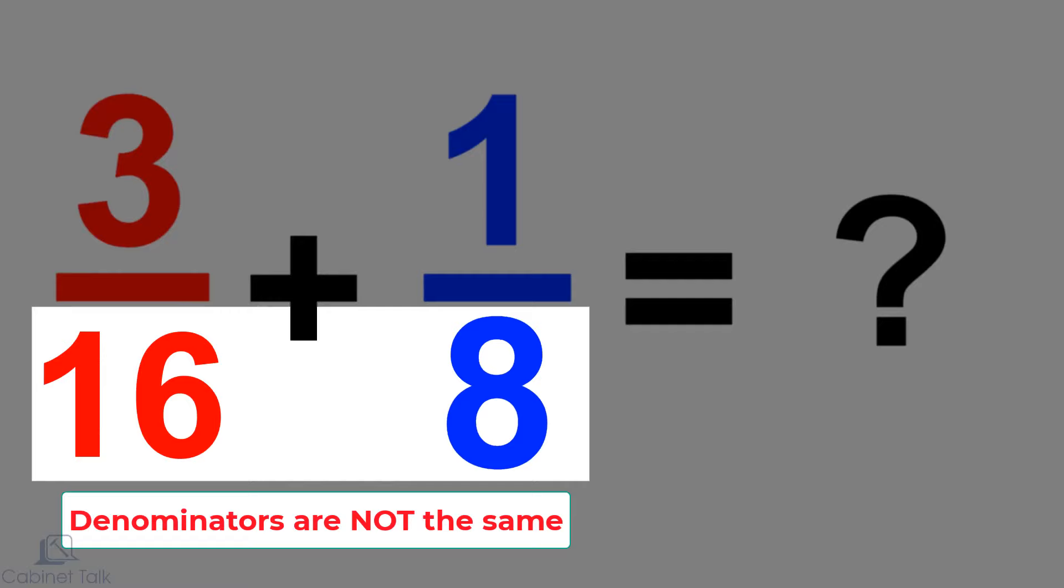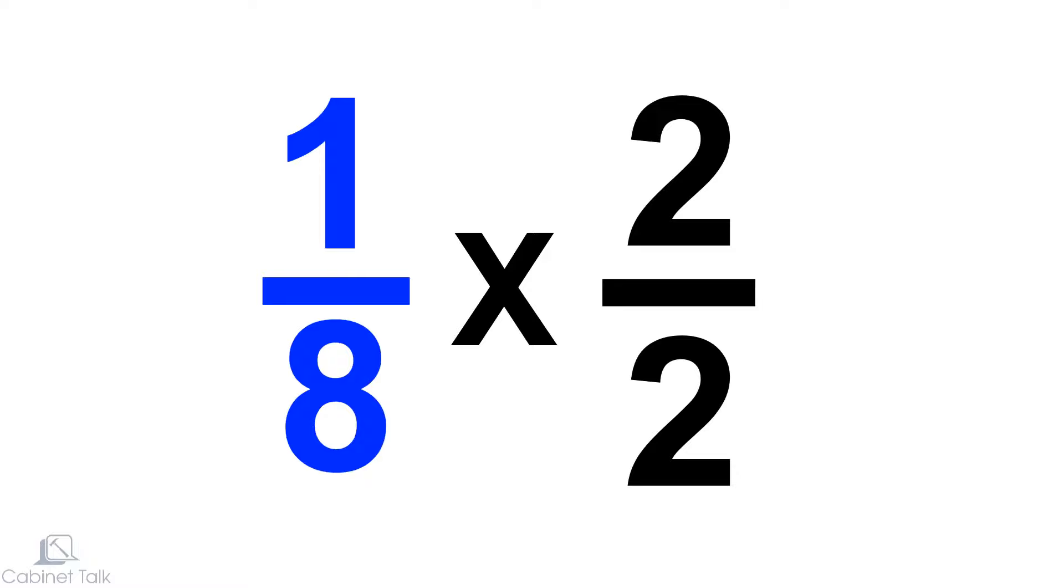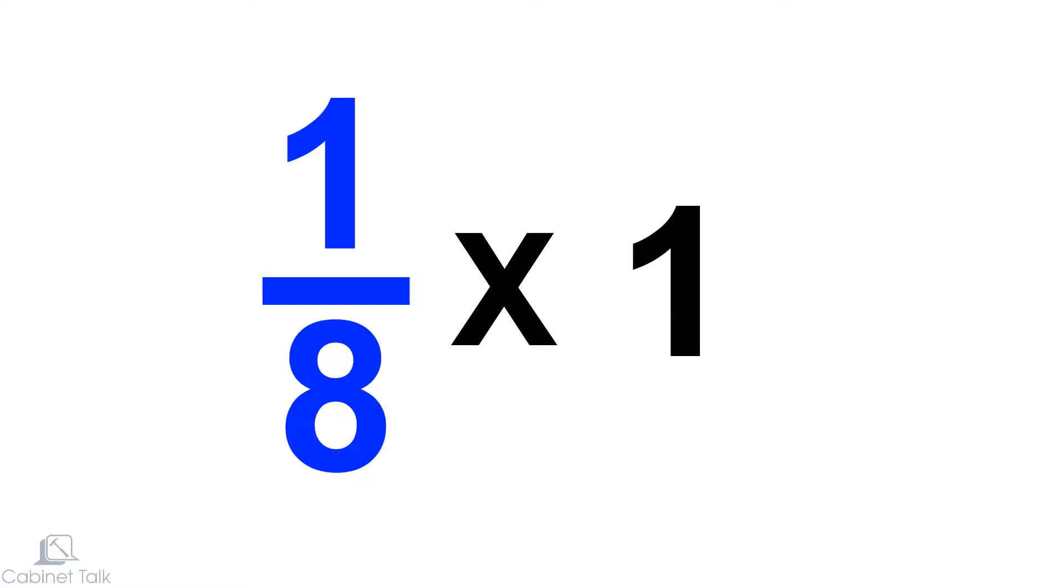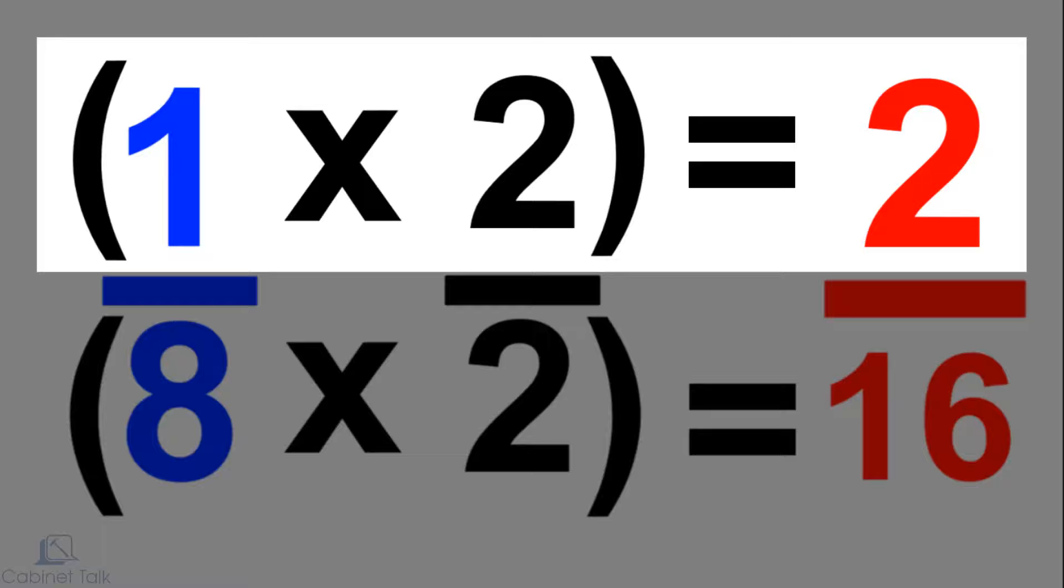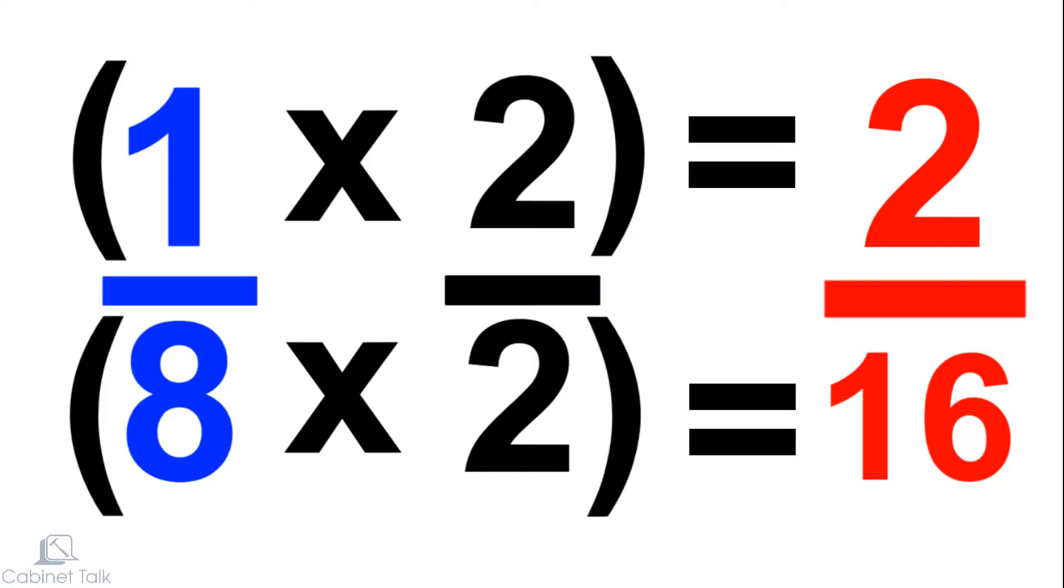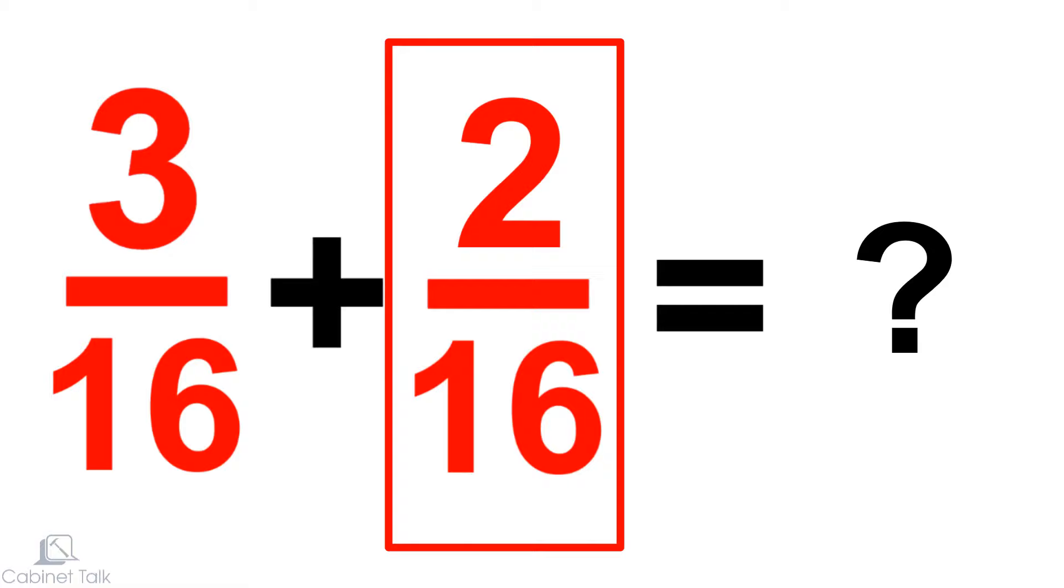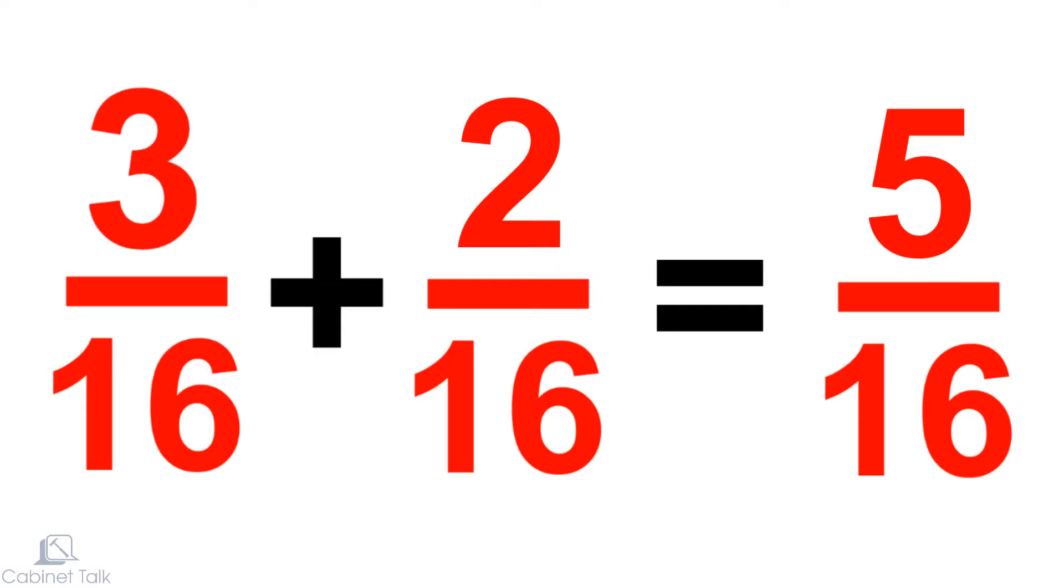If the fractions don't have the same denominator, you'll have to convert one of them first. In this case, we would multiply one-eighth by two over two. Two divided by two equals one, so we're not changing the value of one-eighth, we're just changing the way it looks. One times two equals two, and eight times two equals sixteen. So another way of writing one-eighth is two-sixteenths. The denominators are now the same, so we can add the two fractions together. Three-sixteenths plus two-sixteenths is five-sixteenths.